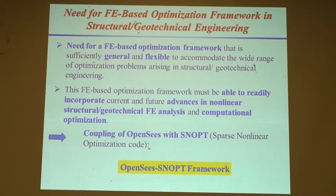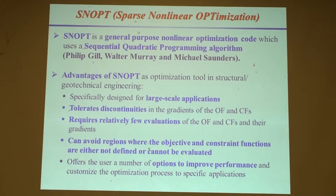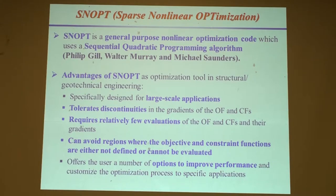The idea of coupling OpenSees with a powerful optimization package came to mind, and we decided to use SNOPT. SNOPT stands for Sparse Nonlinear OPTimization, and it's a general-purpose nonlinear optimization code with sequential quadratic programming. It was developed by three individuals who were at some point all at Stanford, and they wrote one or two books on computational optimization. Professor Philip Gill is now at UCSD — that's how I got to know him.